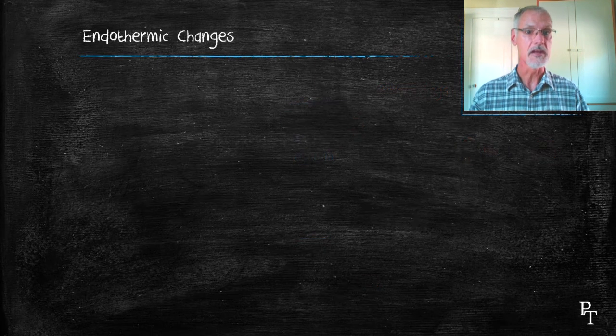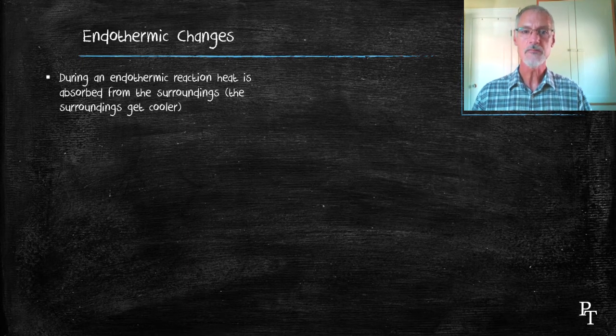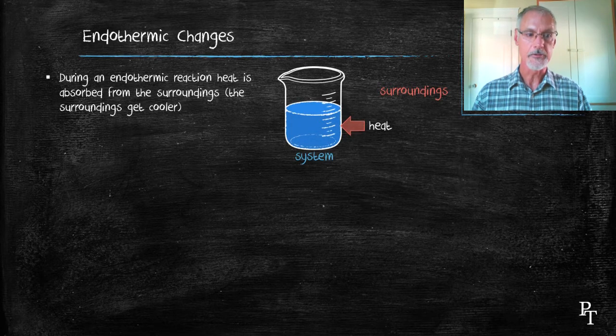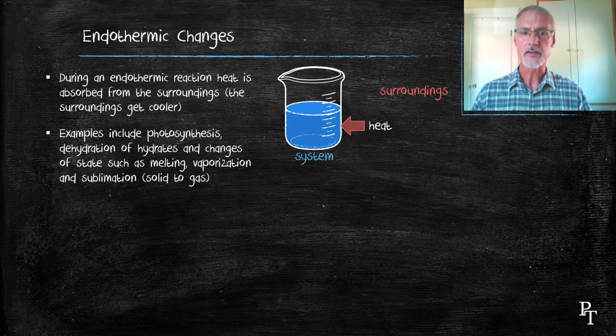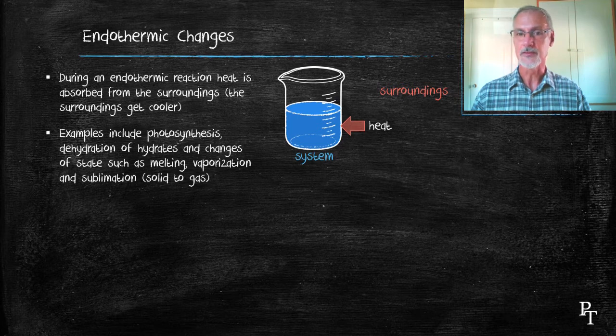Let's look at the converse now, the endothermic changes. Endothermic changes involve heat moving from the surroundings into the system. Examples would include photosynthesis, the dehydration or removal of water from a hydrate, changes of state such as melting, vaporization and sublimation.